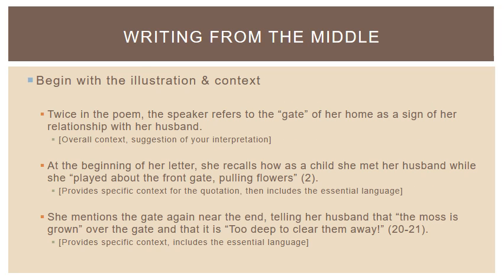Now that we've developed these ideas, we can start to put them on paper. I'm saying we're writing from the middle because we're beginning with the evidence itself — and that's usually not going to be the first thing in a paragraph. It's going to come more towards the middle. But let's begin with the evidence and the context in order to give shape to the paragraph we're trying to write. Beginning with the evidence and the context, we might say: "Twice in the poem, the speaker refers to the gate of her home as a sign of her relationship with her husband." That provides the overall context and gives a suggestion of our interpretation.